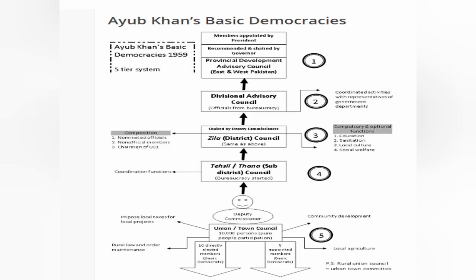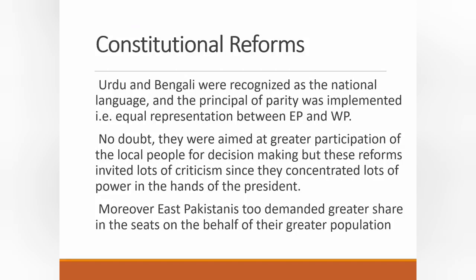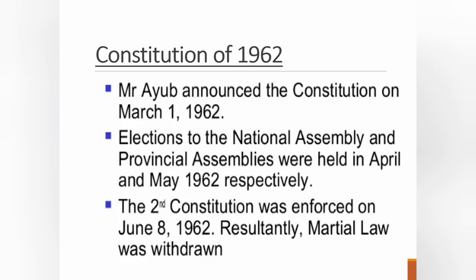Ayoub Khan introduced the 1962 constitution, which established a presidential form of government. In the constitution, Urdu and Bengali were recognized as national languages, and the principle of parity was implemented — meaning equal representation between East Pakistan and West Pakistan. No doubt these reforms aimed at greater participation of local people in decision making, but they invited lots of criticism since they concentrated enormous power in the hands of the president. East Pakistanis also demanded a greater share of seats based on their larger population, which was not granted to them.